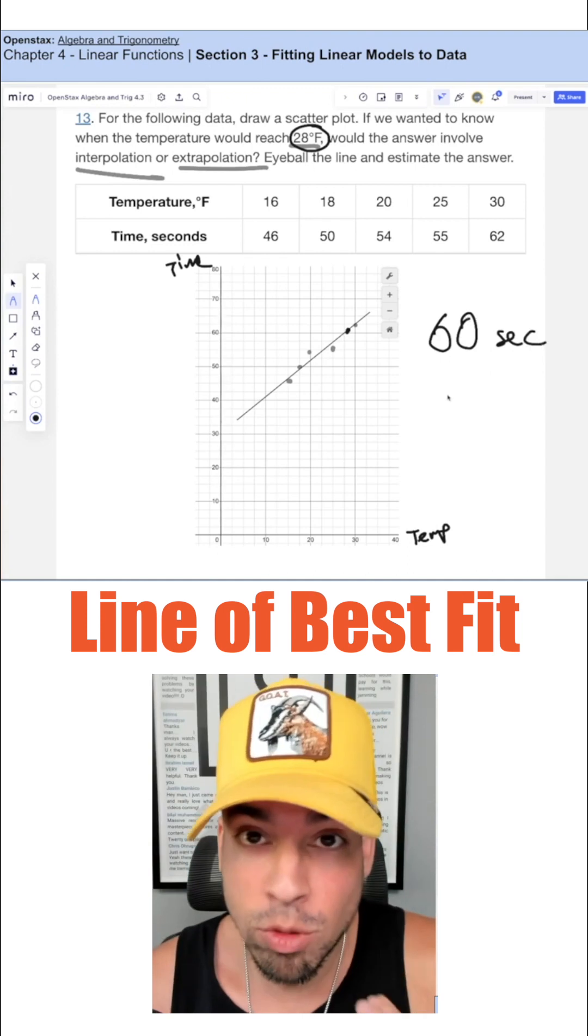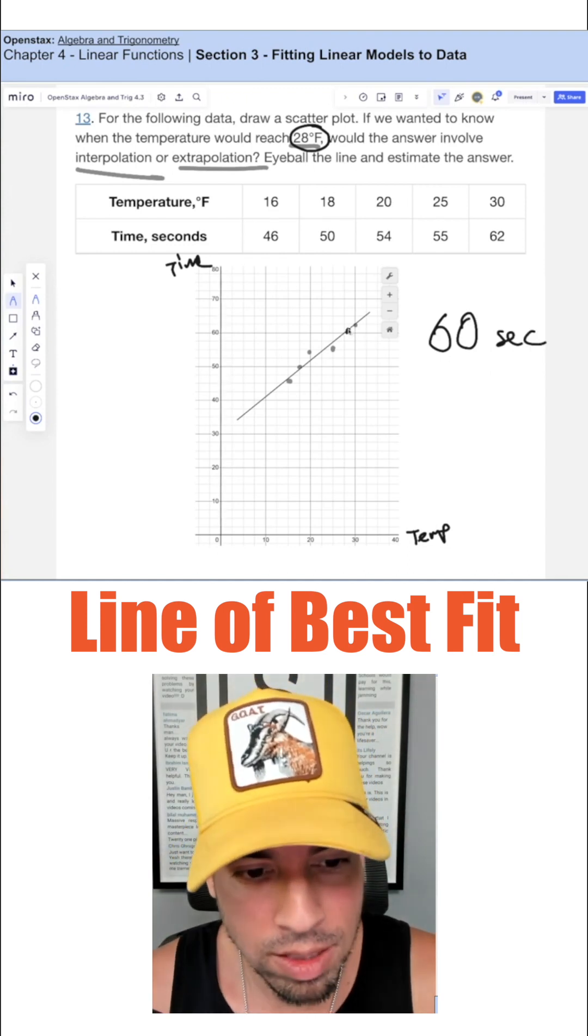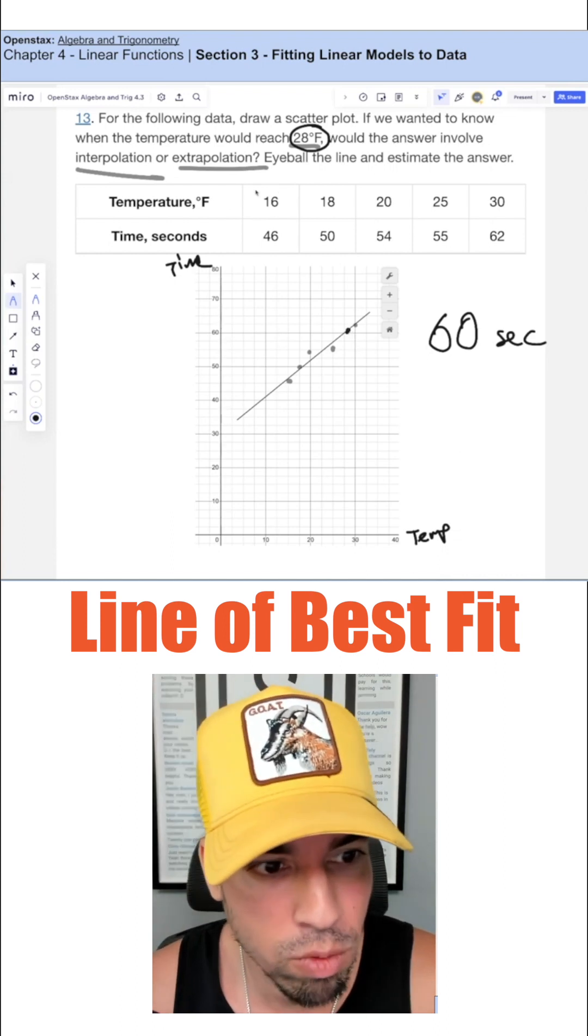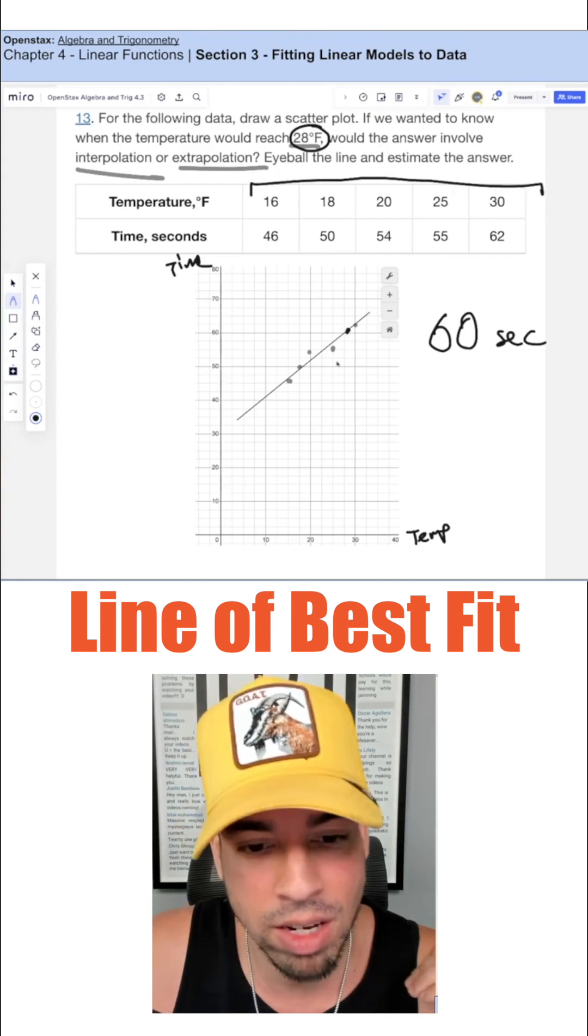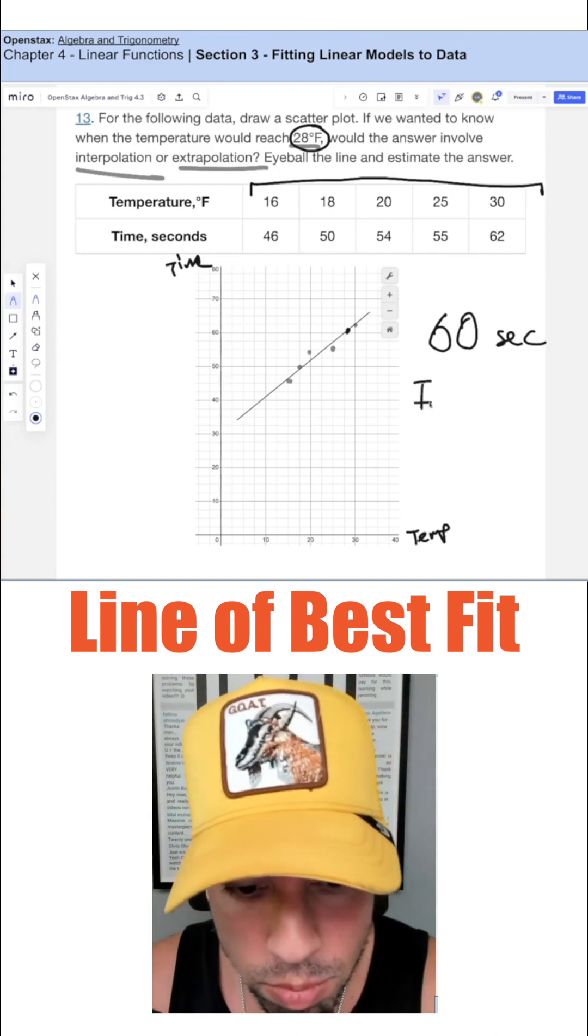Now, the question is, is this interpolation or extrapolation? Well, the data value that we were testing, 28 degrees, is within the domain that has already been provided, right from 16 to 30. So when we're going within the data values provided, this is called interpolation.